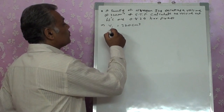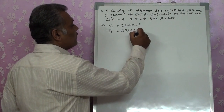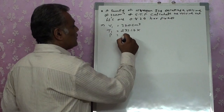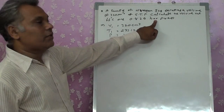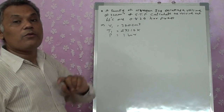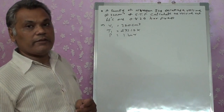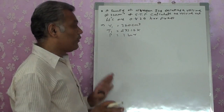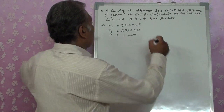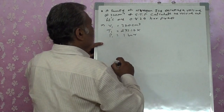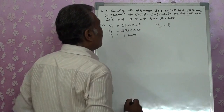This volume is occupied at STP, so the initial temperature T₁ = 273.15 K and pressure P₁ = 1 bar. I'm taking pressure in bar because P₂ is also given in bar. Temperature must always be in Kelvin in chemistry numericals. So V₁, T₁, and P₁ are given; we want to find V₂.